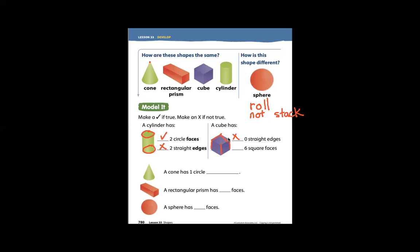All of these edges are straight. It also has six square faces. So that is true. What is false is that it has zero straight edges.